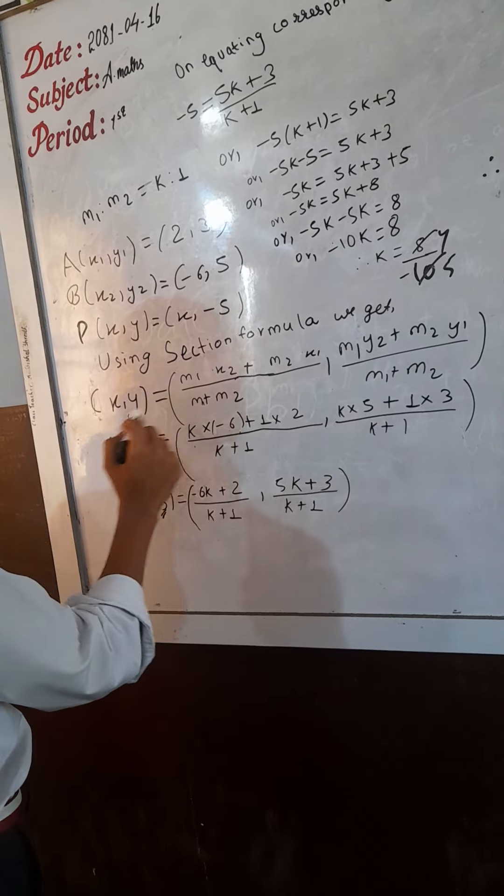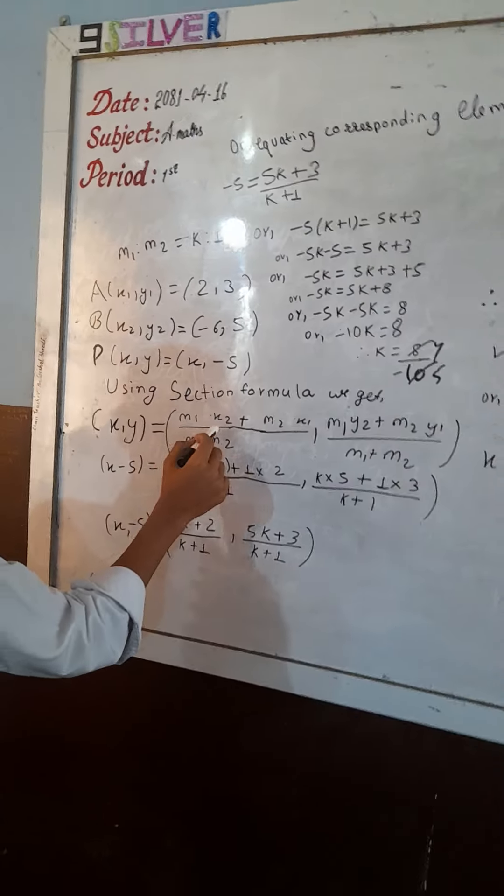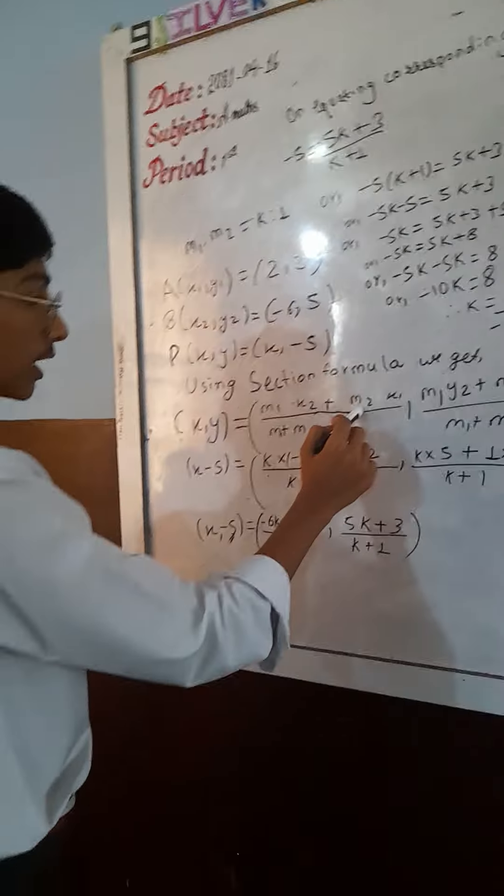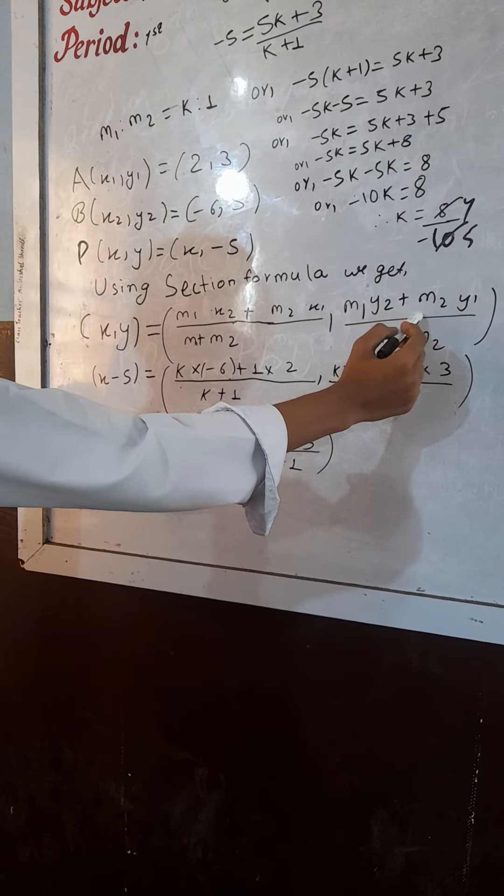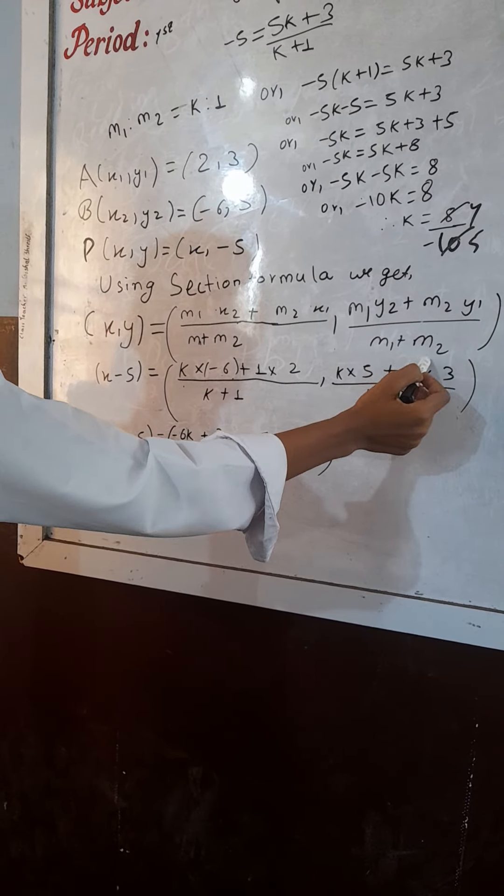Using the formula of the section, X comma Y is equal to M1 X2 plus M2 X1 upon M1 plus M2, M1 Y2 plus M2 Y1 upon M1 plus M2.